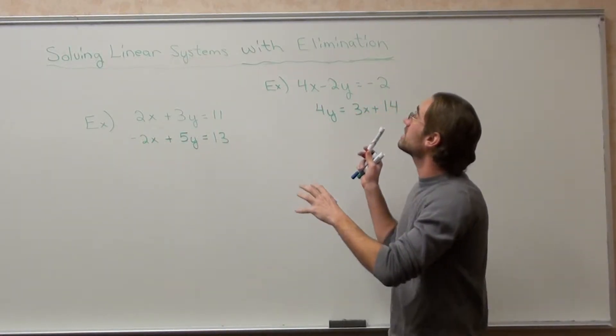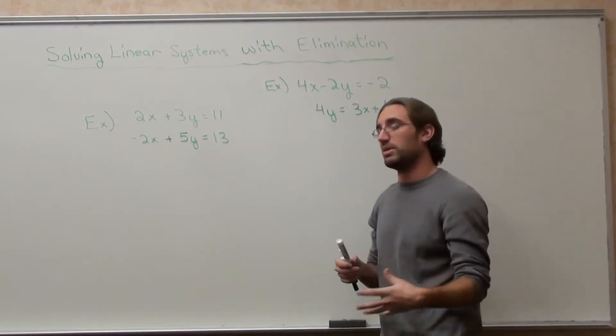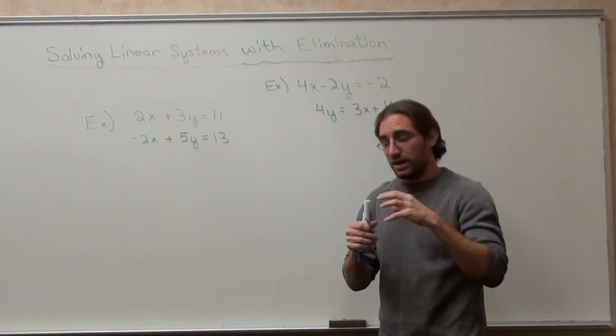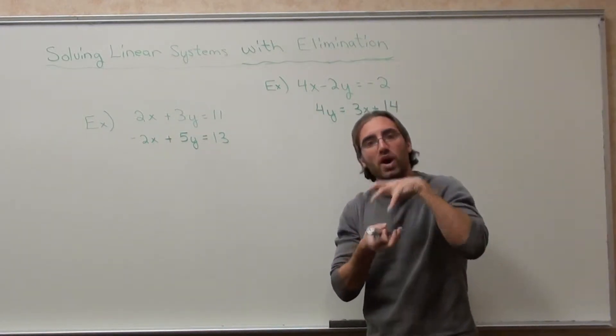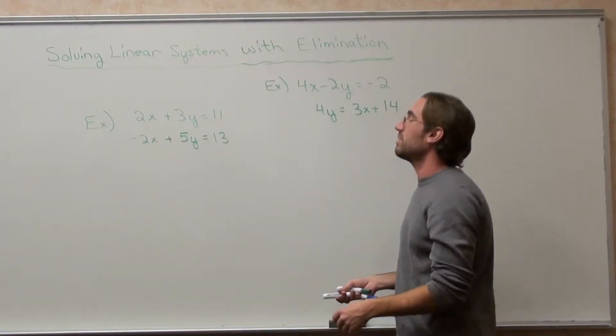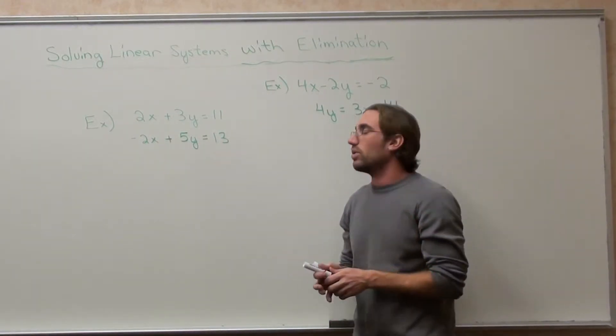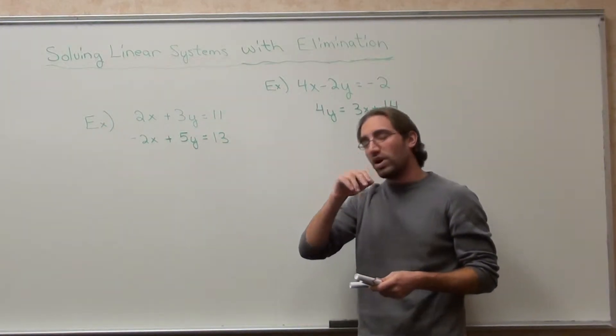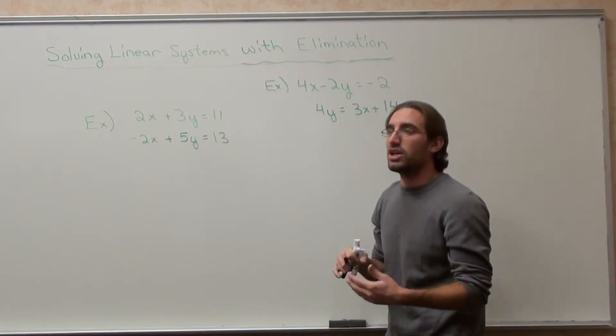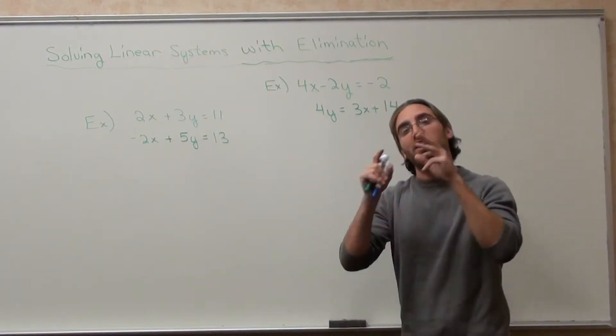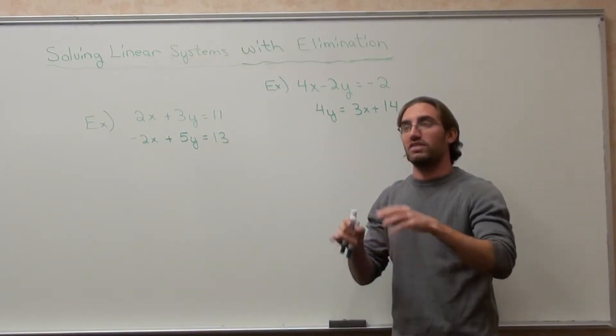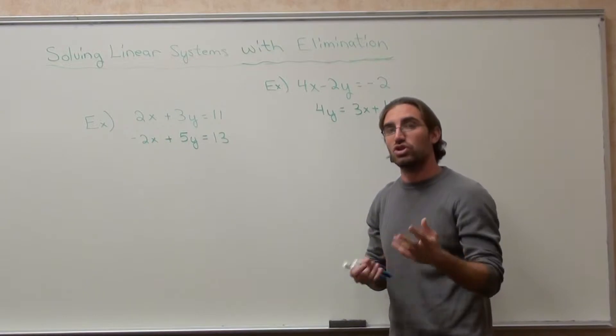So when we're solving linear systems with elimination or linear combinations what we actually do is we add whole equations together to cancel out specific terms. What I mean by that is we're going to eliminate. So I'm looking at this first one and before I get to it I should mention something very quickly. When you're using elimination you have to line up your x's, you have to line up your y's, you have to line up your equals, and you have to line up your numbers. That's the first step in elimination. You have to line everything up nicely. So make sure you do that.